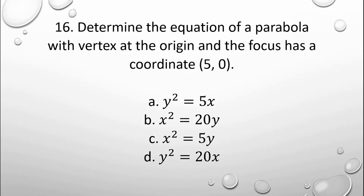Next, number 16: determine the equation of a parabola with vertex at the origin and focus at coordinate 5, 0. The choices are: a) y squared is equal to 5x; b) x squared is equal to 20y; c) x squared is equal to 5y; and d) y squared is equal to 20x.